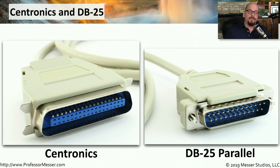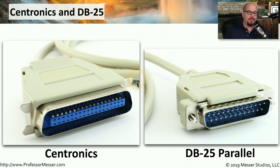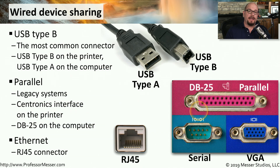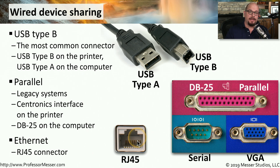Here's a comparison of these two connectors. The Centronics connector is the type of connection you would commonly see on the printer, and they're usually locking connections on the sides that allow you to lock it in place on the back of the printer. The DB25 parallel connection is what commonly plugs into the computer. And if this is a device that allows you to connect to a wired network, there'll usually be an RJ45 connector that allows you to plug into your Ethernet network.